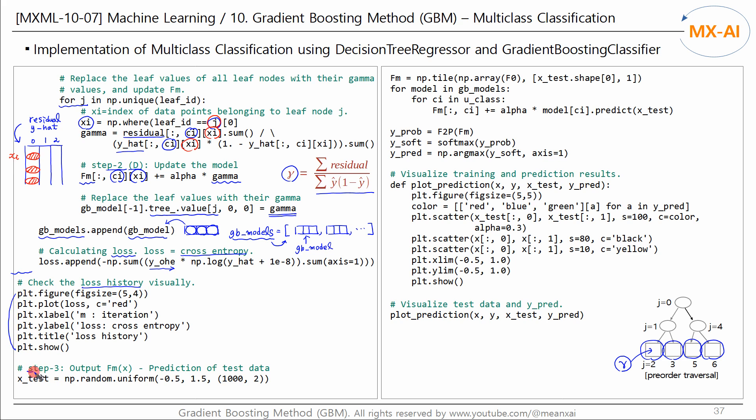Step 3 is the prediction stage. We randomly generated 1000 test data points. In the prediction step, log odds fm, which will be updated through iterations, is initialized to the initial log odds f0 for the training data.